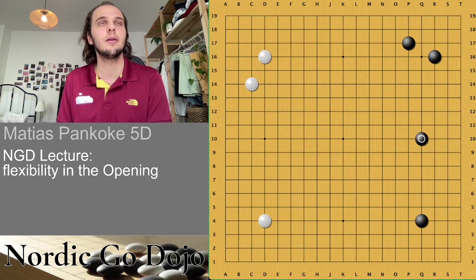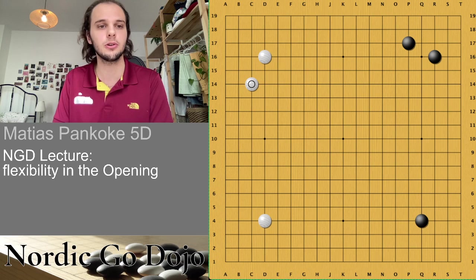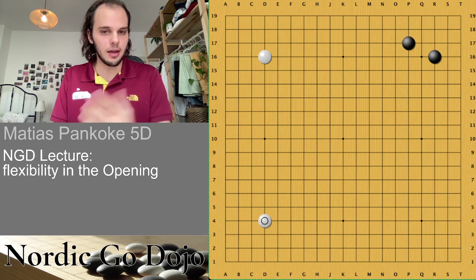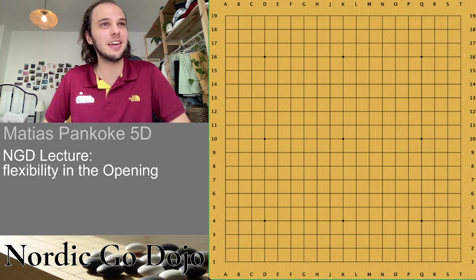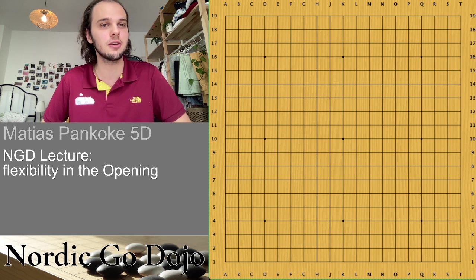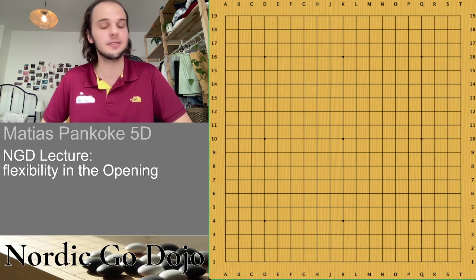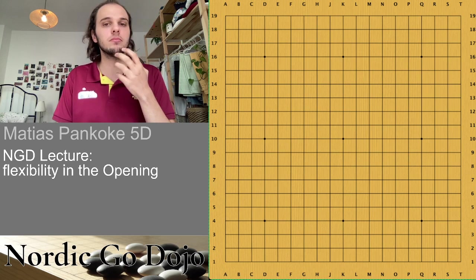I prepared some game examples from my own games — most of them are games I played against Jeff and against Anti. We will see very flexible openings; I think those two are quite good examples of how to be flexible in the opening. I learned something from them, so some of my games reflect that as well.